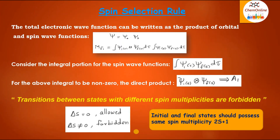The electronic wave function ξ for a molecule actually consists of contributions from the orbital component ξO and the spin component ξS. Therefore, the total electronic wave function can be written as a product of orbital and spin wave functions, that is ξ equals ξO into ξS.